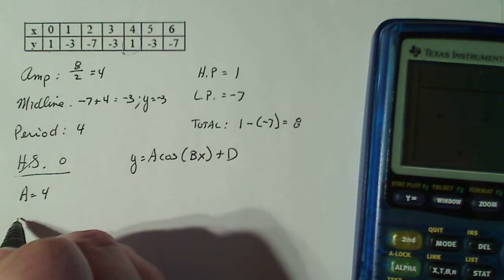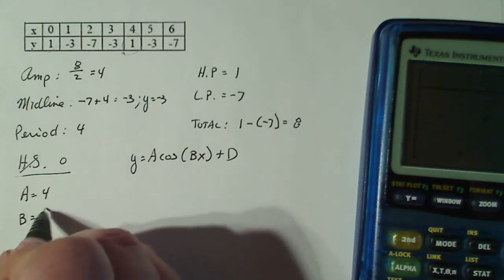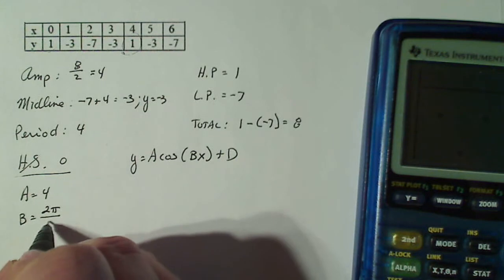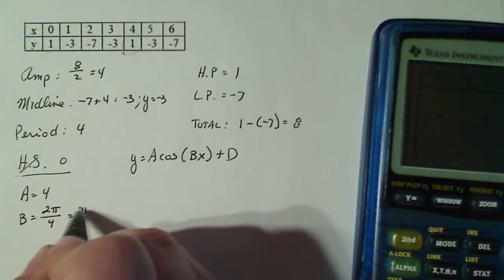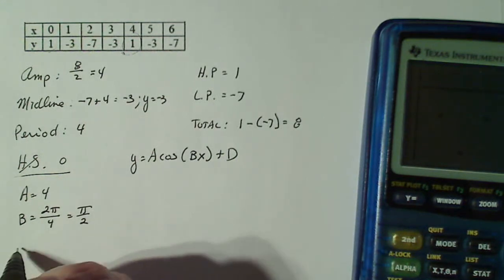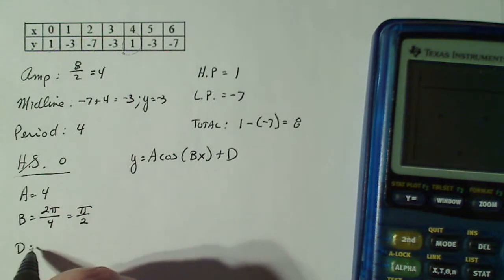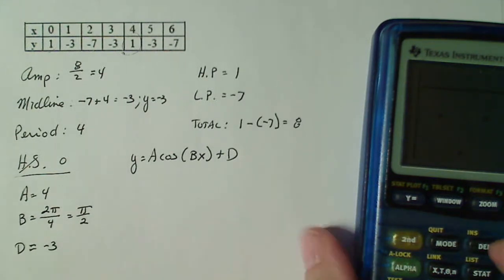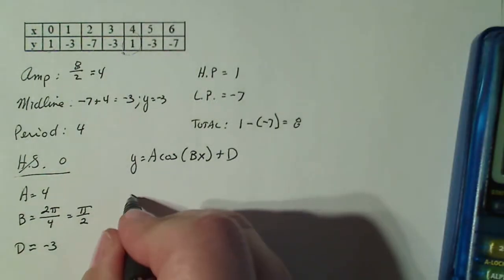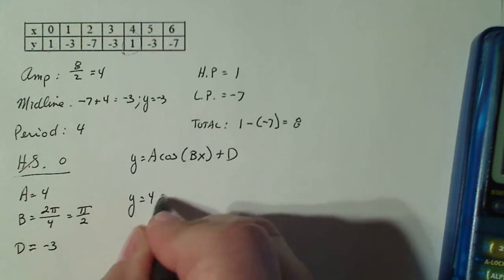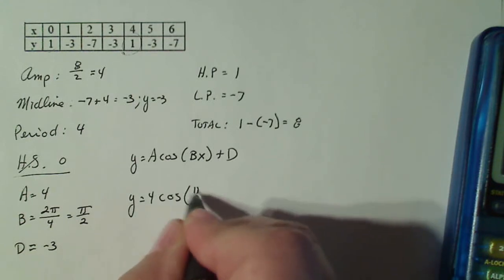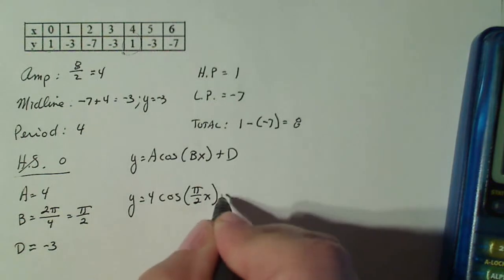A is four, b is equal to two pi over the period. And that simplifies to pi over two. And then d is where the midline is, so that's minus three. So my model turns out to be y equals four cosine pi over two x minus three.